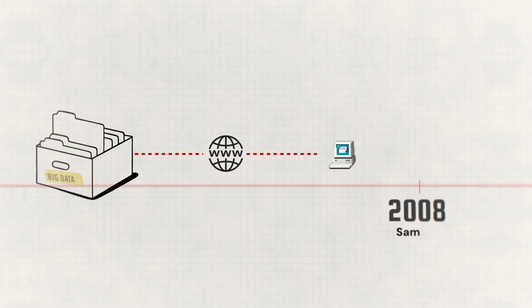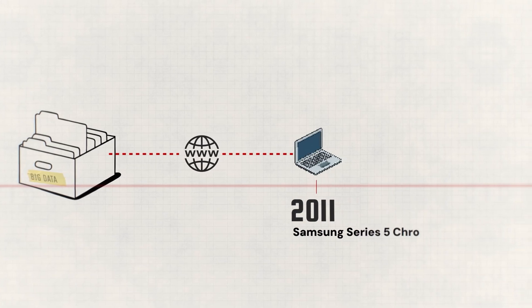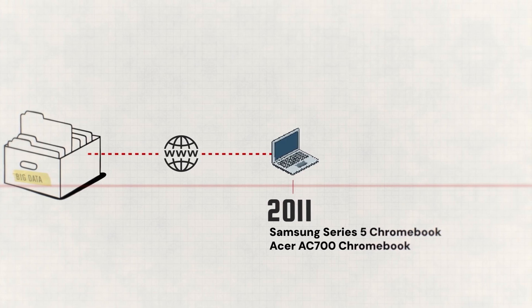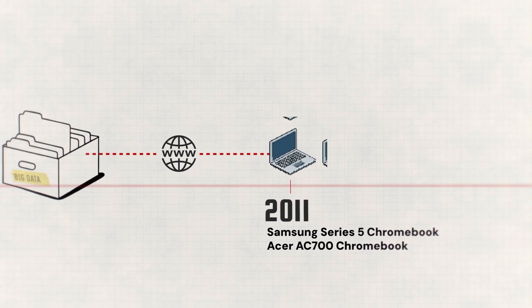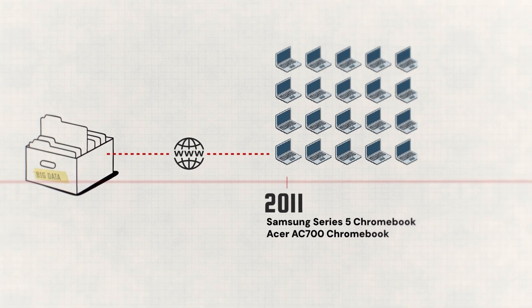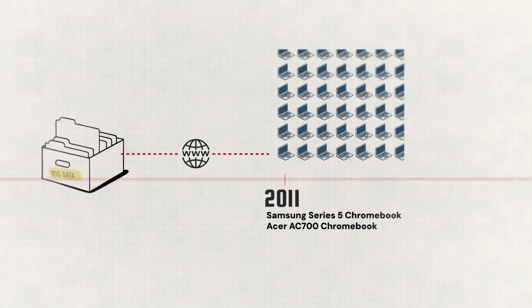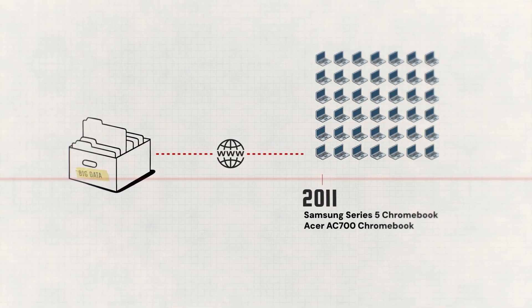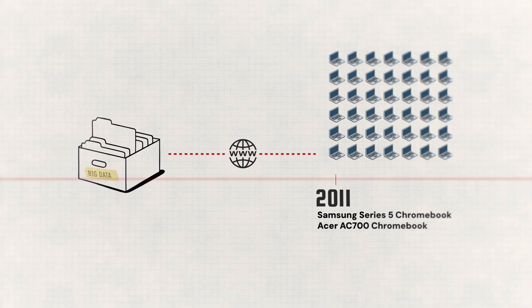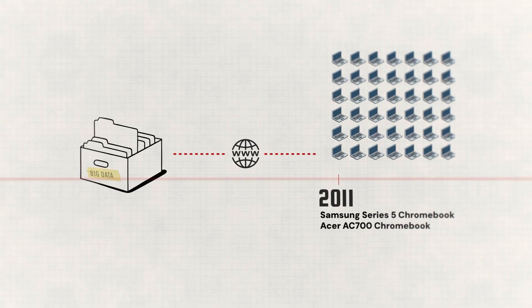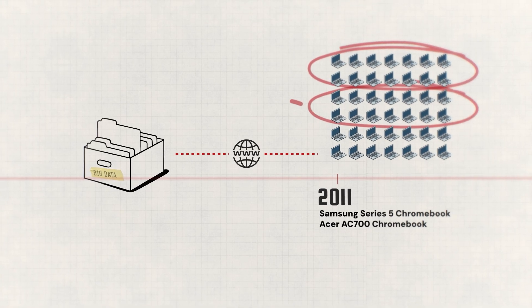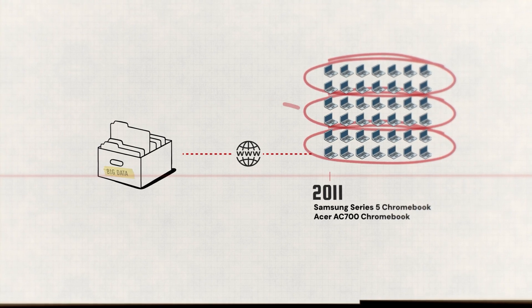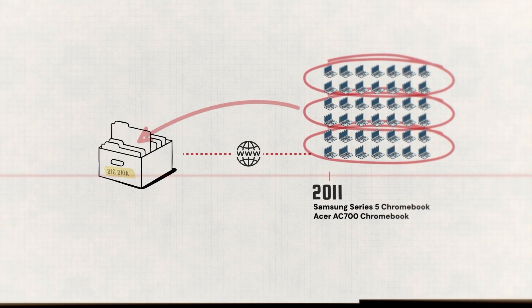So by 2010, the first piece falls into place when Google releases something to answer that exact call. Chromebooks. $200 laptops that run everything in the cloud. Because these devices are so cheap and easy to manage, schools can finally achieve one-to-one computing. Every student gets a device. But Chromebooks aren't just solving the hardware problem. They're secretly creating something else. Massive educational datasets. Because when millions of students use Google Classroom, every click, every answer, every pause gets recorded, turning all of the data into the training fuel for AI education systems worldwide.